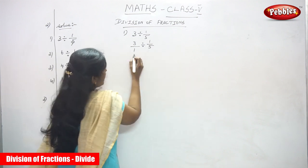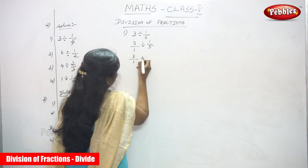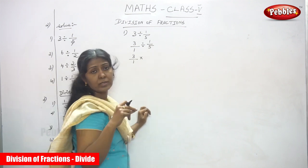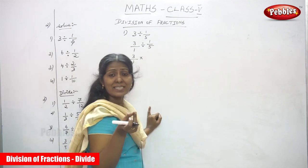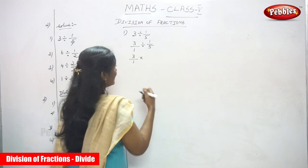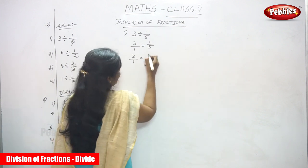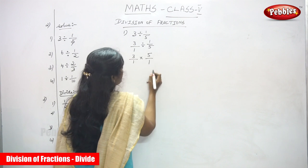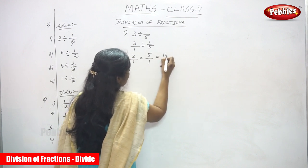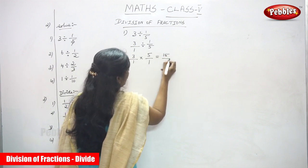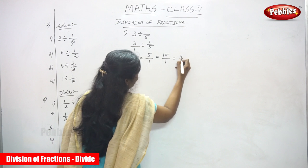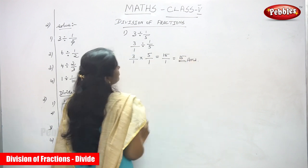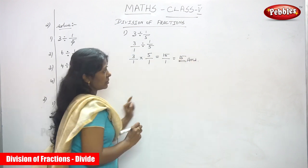Next step: find the reciprocal of the divisor. 1 by 5 becomes 5 by 1. So the answer is 3 into 5 equals 15, and 1 into 1 equals 1. The exact answer is 15.